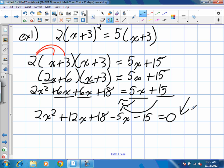I collect like terms again. 12x and 5x would be like terms and 18 and 15. This will leave us with 2x squared. 12x minus 5 will give us positive 7x. And 18 minus 15, positive 3. Is equal to 0.